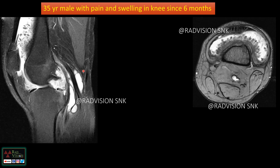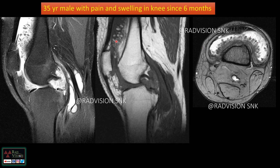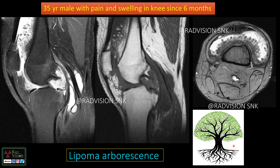Next case: a 35-year-old male with pain and swelling in the knee for six months. You can see multiple frond-like projections noted within the synovium with thickening of the synovium. There is free fluid noted within the joint space even extending into the suprapatellar recess, and a small baker's cyst. These frond-like synovial projections show minimal blooming on GRE, and on T1-weighted images they have signal intensity similar to fat. These fat-like projections of the synovium resemble the branching of a tree — this is a classic case of lipoma arborescens.